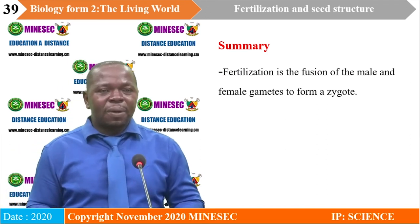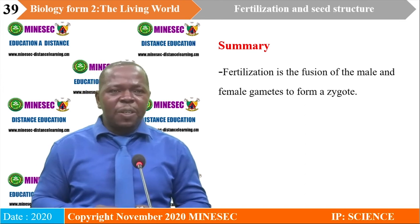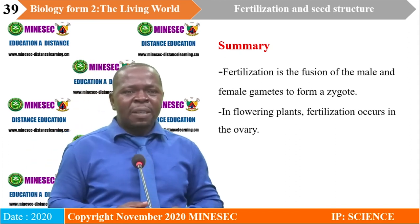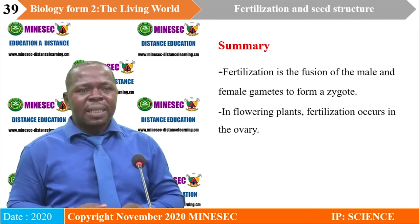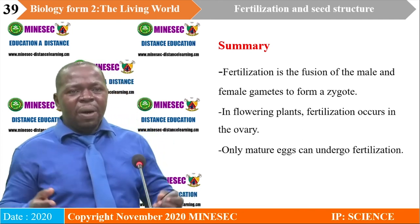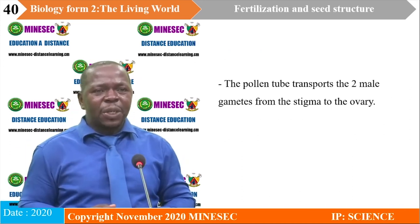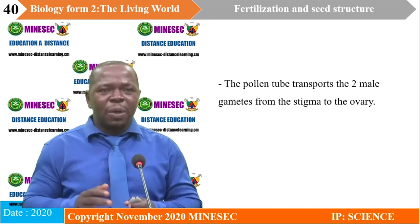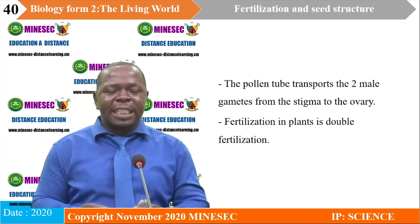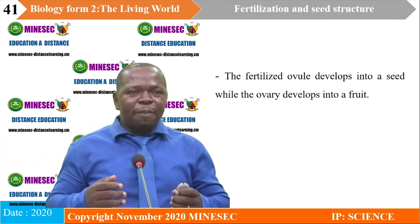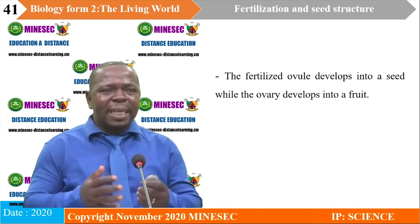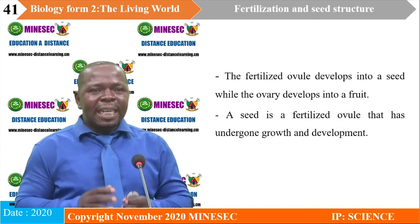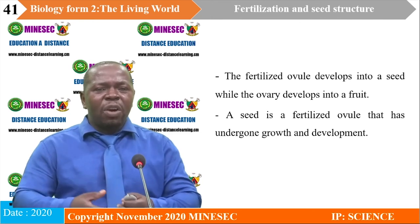Summary: Fertilization is the fusion of the male and female gametes to form a zygote. In flowering plants, fertilization occurs inside the ovary. Only mature eggs can undergo fertilization. The pollen tube transports the two male gametes from the stigma to the ovary. Fertilization in plants is double fertilization. The fertilized ovule develops into a seed while the ovary develops into a fruit. A seed is a fertilized ovule that has undergone growth and development.